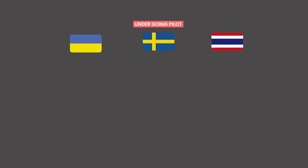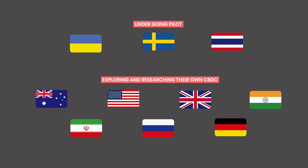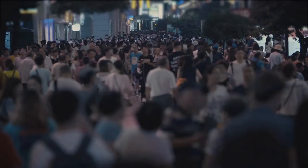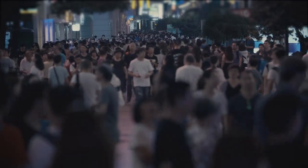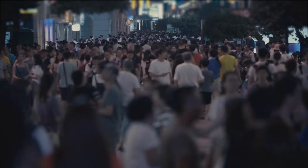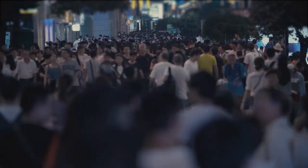Ukraine, Sweden, and Thailand are also undergoing their own pilots, and many other countries such as Australia, the United States, the United Kingdom, India, Iran, Russia, and Germany have begun to explore and research the possibility of implementing their own CBDCs. To understand why nations around the world are moving in this direction, we should explore the monetary landscape of China, especially as they are the leading nation in this area.